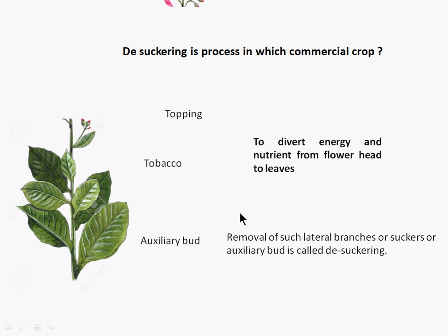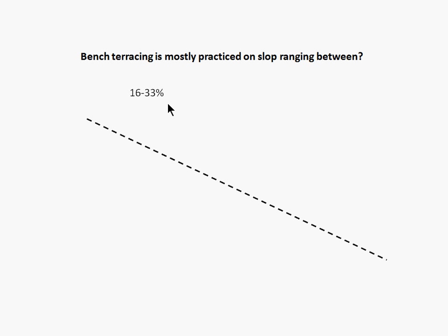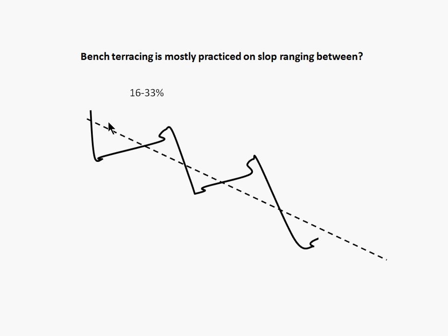Moving towards the second question: bench terracing is mostly practiced on slopes ranging between 16 to 33%. When we want to do cultivation in a hilly or undulated area it is very tough if the slope is 16 to 33%. So what we do? We give the shape like this — this is your bench terrace formation.